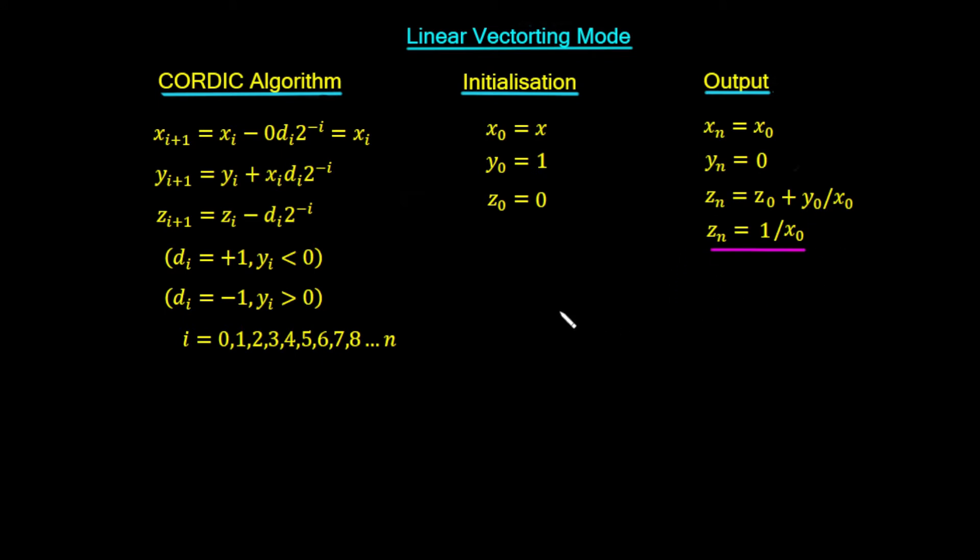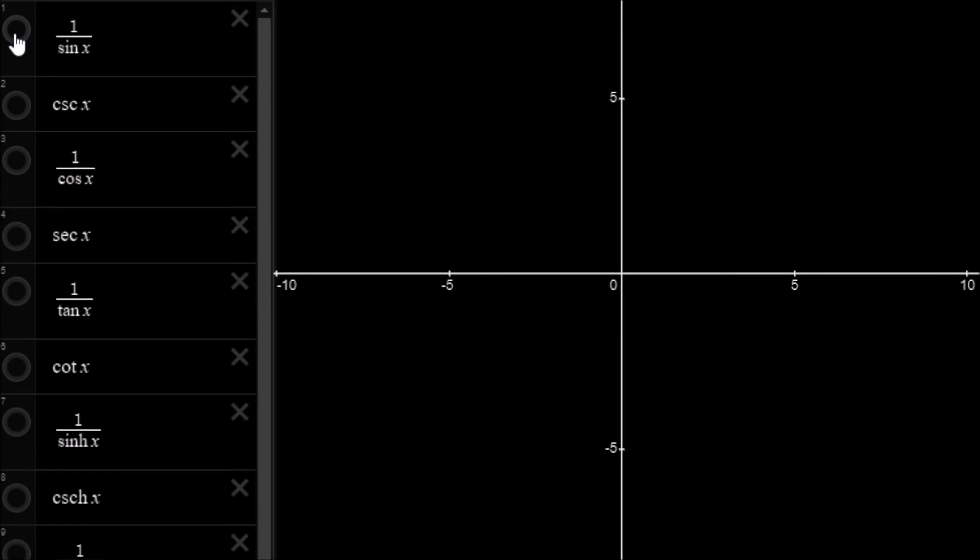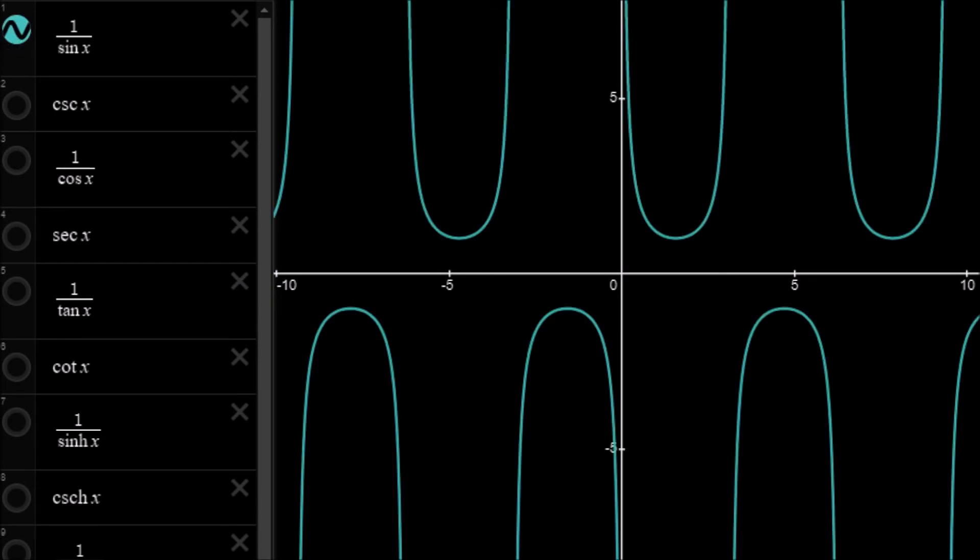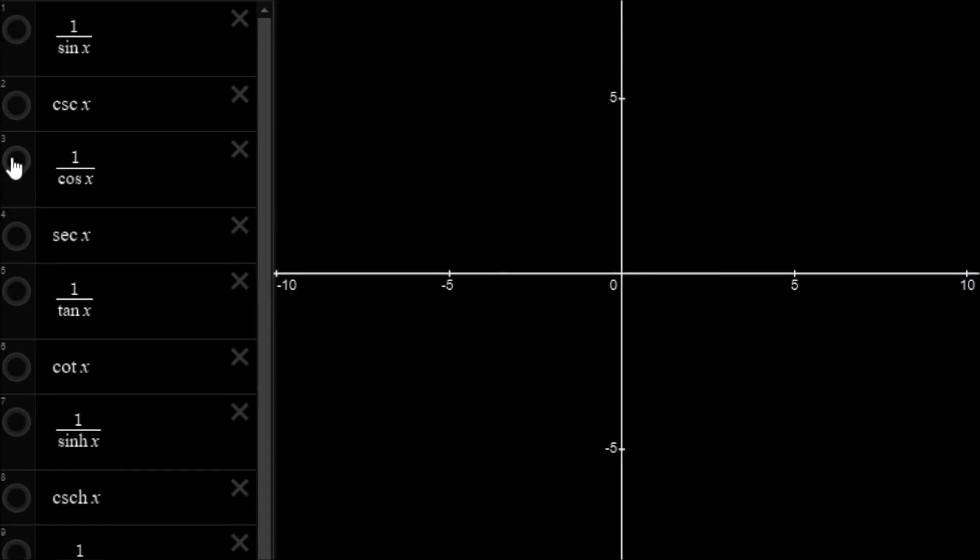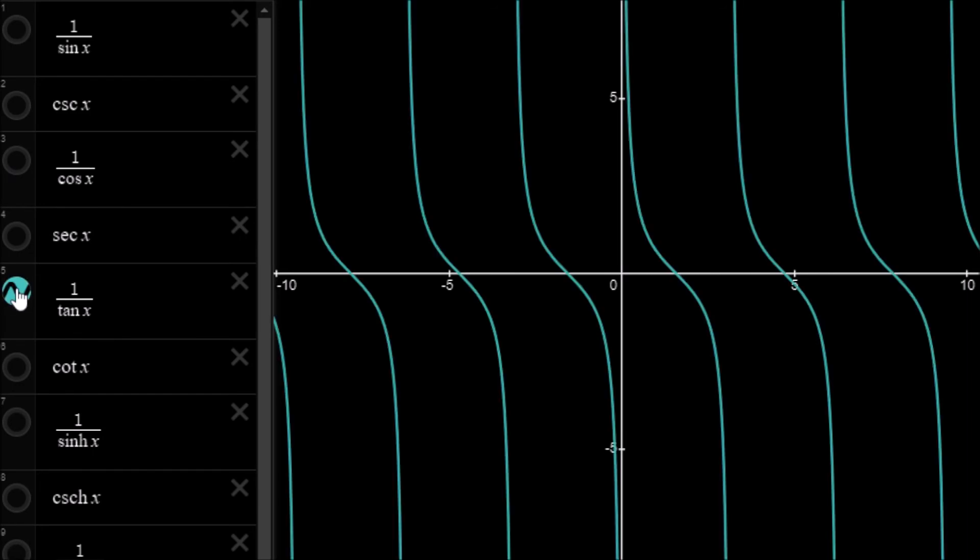So let's have a quick look at these functions in the graphical calculator. So we have the reciprocal of the sine, which is 1 upon sine, which is written as cosec x. We have the reciprocal of the cos, which is written as sec x. We have the reciprocal of the tan, which is written as cot x.